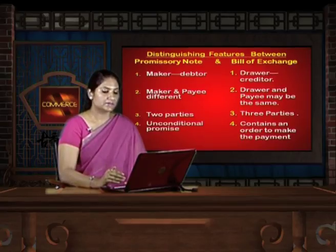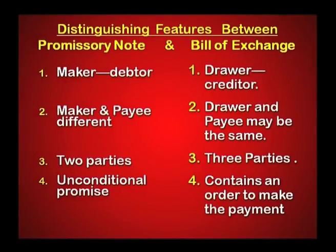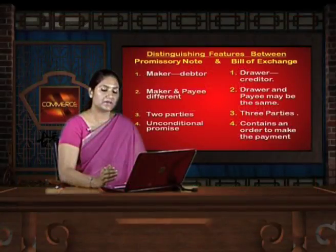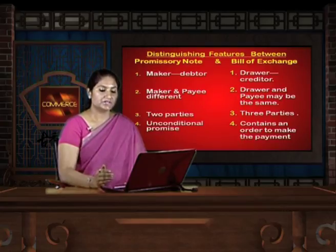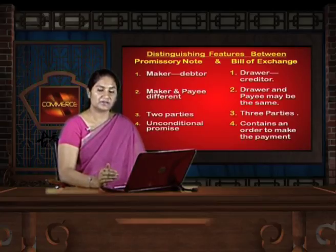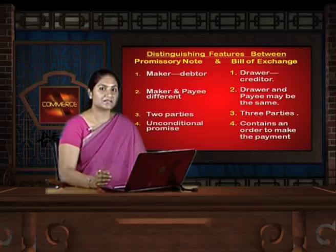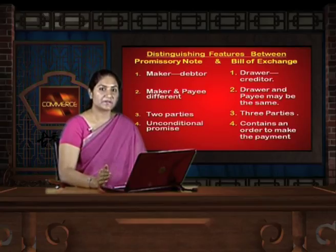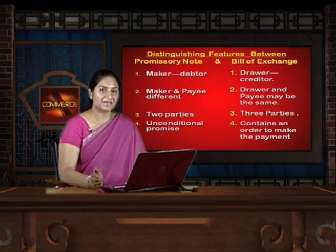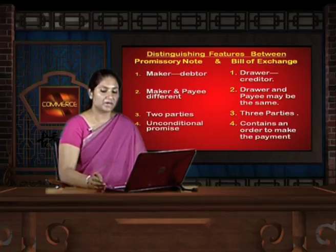In a promissory note, the maker and payee are always different people. In a bill of exchange, the drawer and payee may be the same person — the drawer can instruct the drawee to make payment either to himself or to a named payee, so the payee could also be the drawer himself.